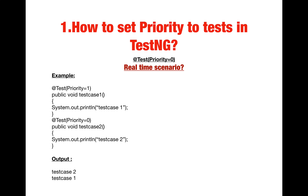First question: how to set priority to tests in TestNG. This is a very important question. Setting priority means if you have 10 test cases, how would you as a QA engineer prioritize them? You set priority at the @Test annotation level. Zero is the highest priority, taking precedence over everything — zero, one, two, three — that order you define at the @Test annotation.